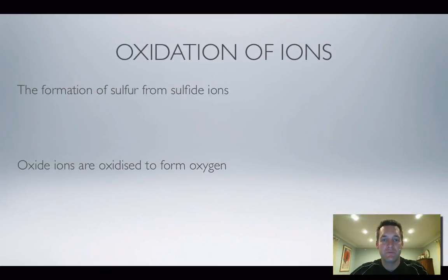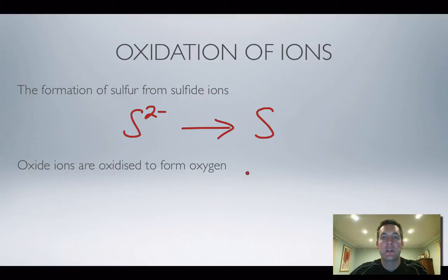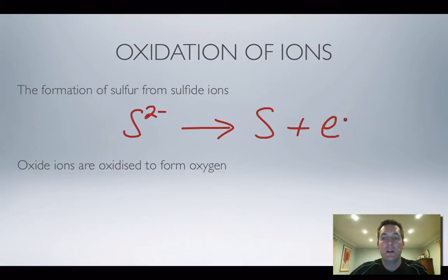Moving on to the oxidation of ions: sulfide ions. Sulfur is in group six, so a sulfide ion has a 2− charge, and we're forming sulfur, which is simply S. The atom count balances. This side is more positive, so we add electrons to the more positive side — we need two electrons to balance the two negatives. Electrons on the right because we're oxidizing.